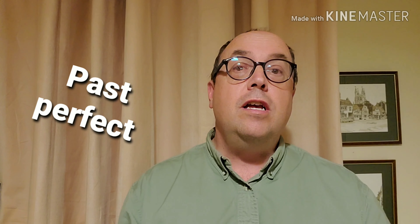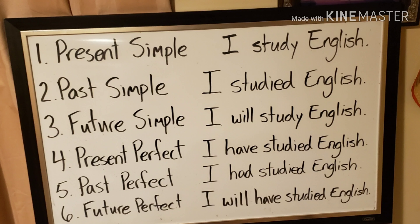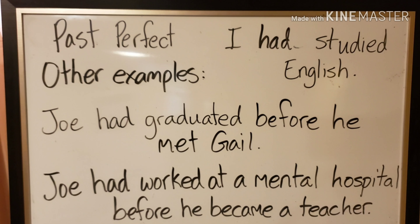Tense number five is the past perfect. We use this in conjunction with something else that's in the past. So, 'I had studied English.' We only use it when talking about two things that happened in the past and you want to know which came first. For example, 'I had studied English before I went to Canada' — the studying happened first, then going to Canada happened second. On the whiteboard, number five, 'I had studied English.' Examples: 'Joe had graduated before he met Gail' — that's my wife — and 'Joe had worked at a mental hospital before he became a teacher.' That's true.